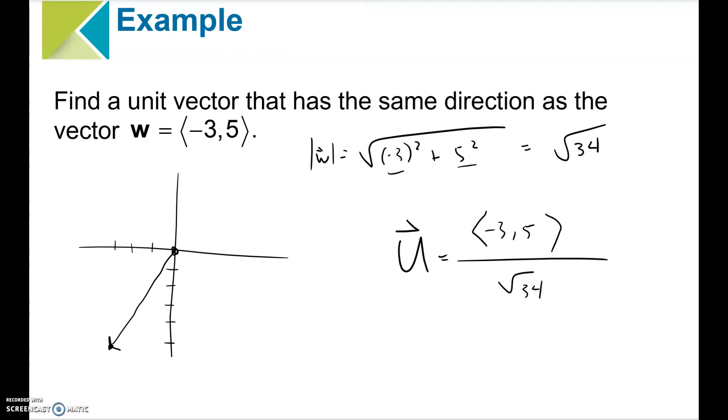So this is what I'm calling the unit vector for W. And you don't want to write it like this. You just want to write it in its component form, which is negative 3 over root 34 and 5 over root 34. And that's it. That's a unit vector in the same direction.